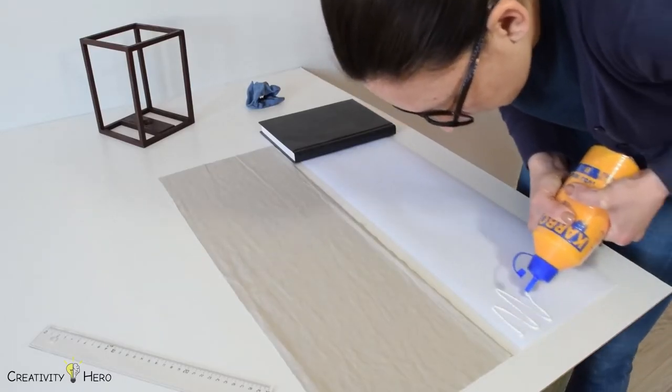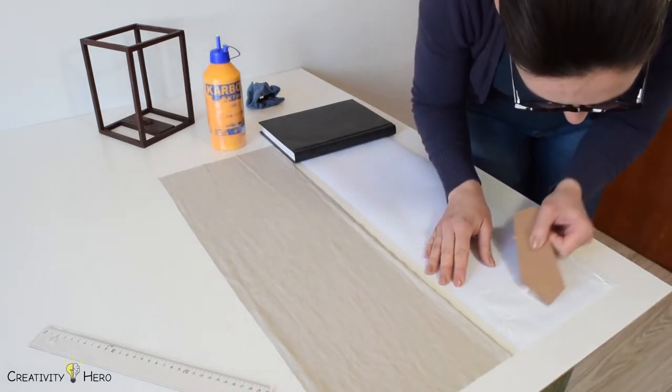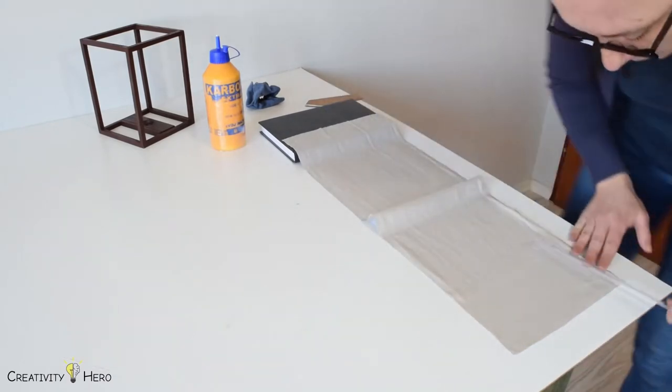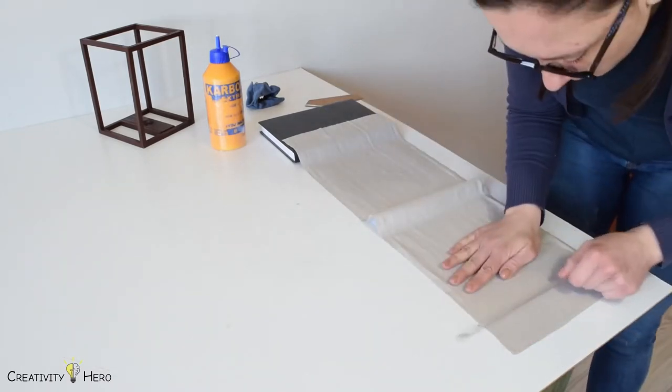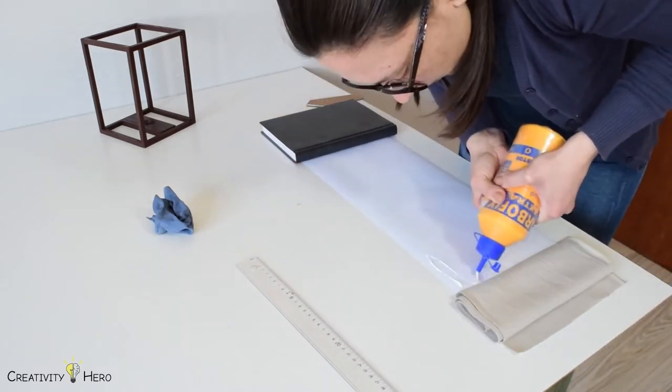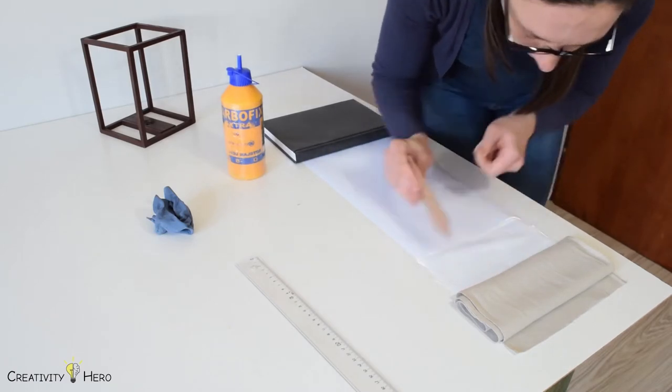After that I moved on to making the lampshade. I used a paper roll and cut 62 by 21 centimeters of it. I also cut the linen fabric 63 by 23 centimeters so that I could easily glue it to the paper and fold the edges to get a nice and smooth look.